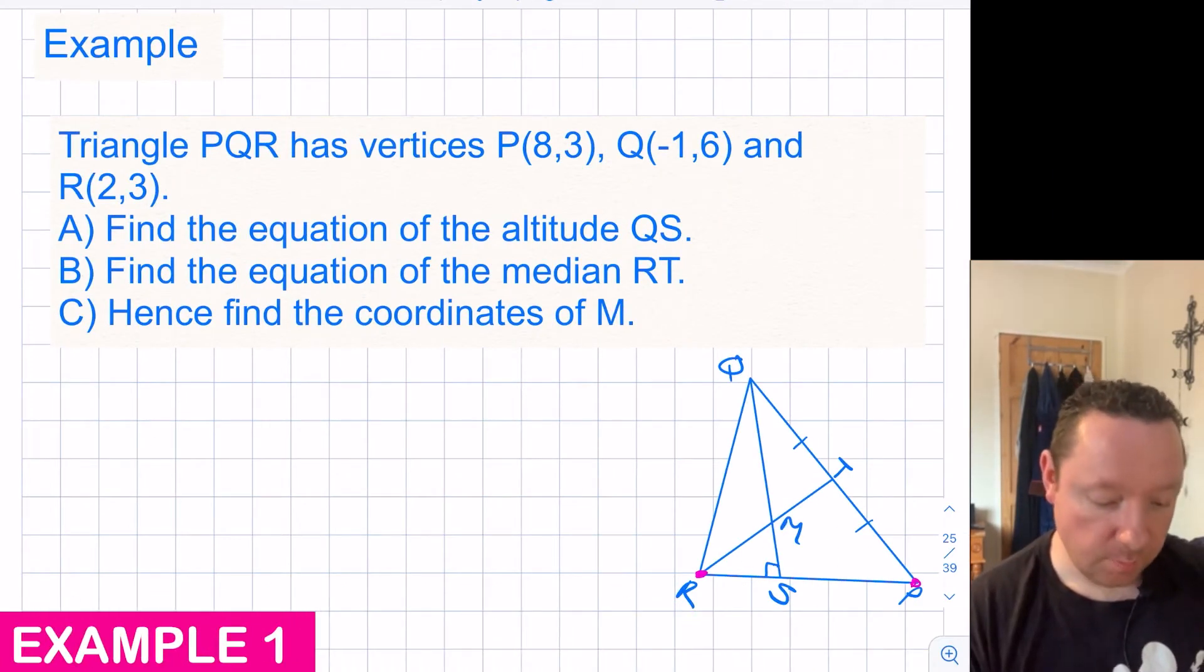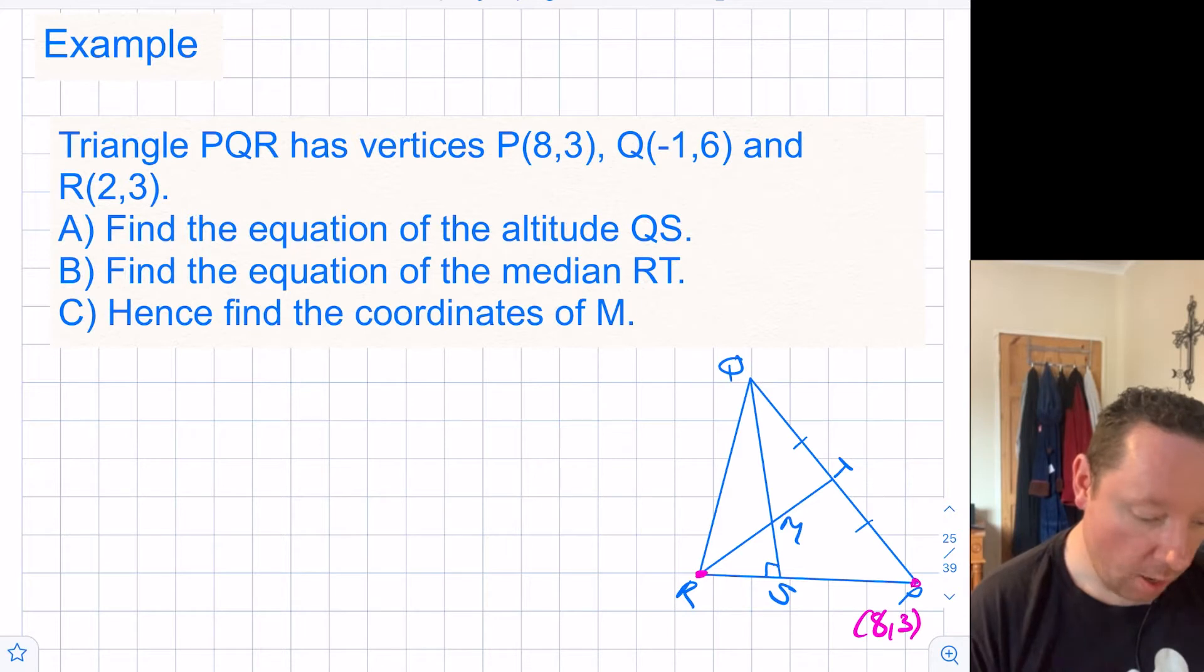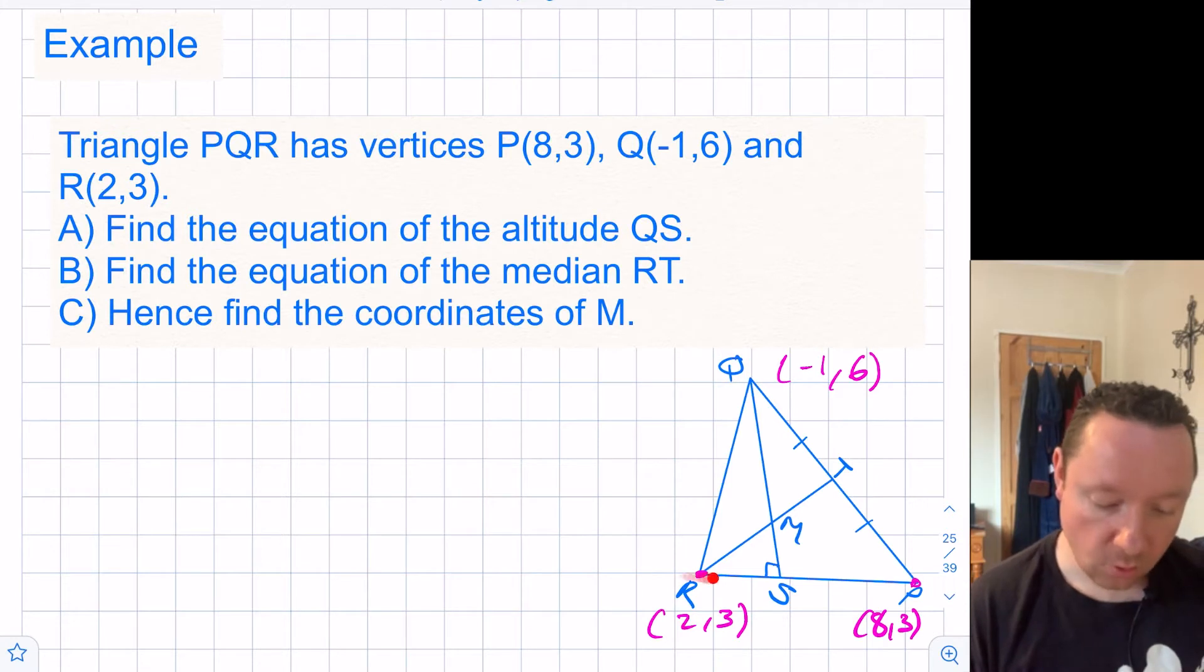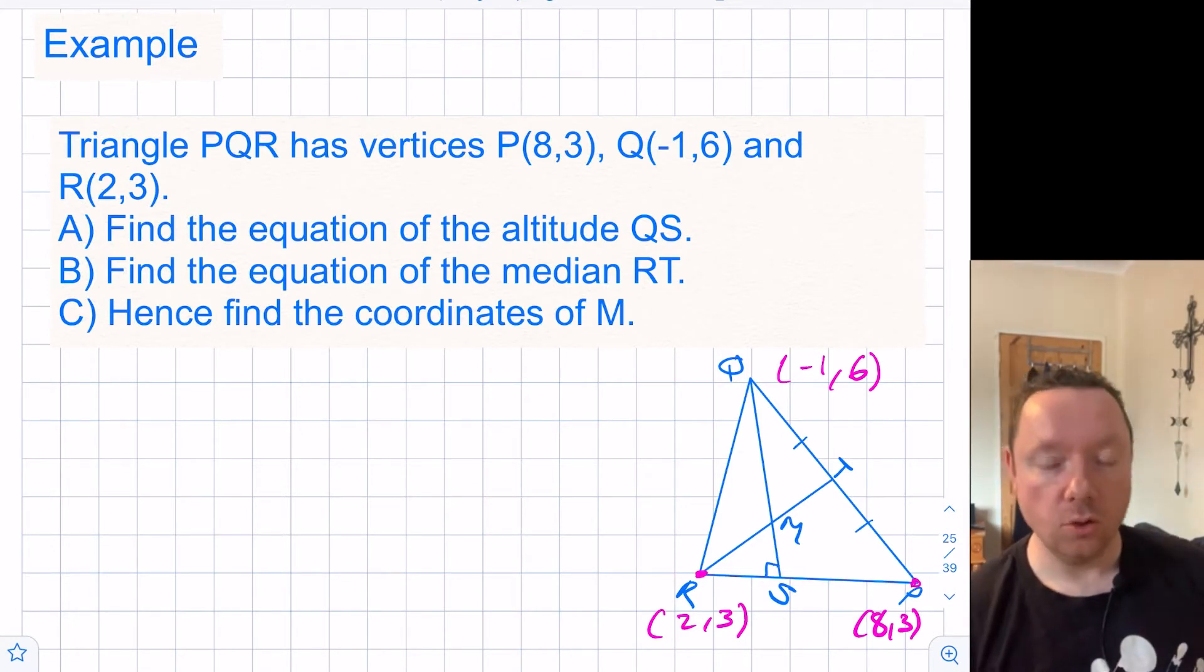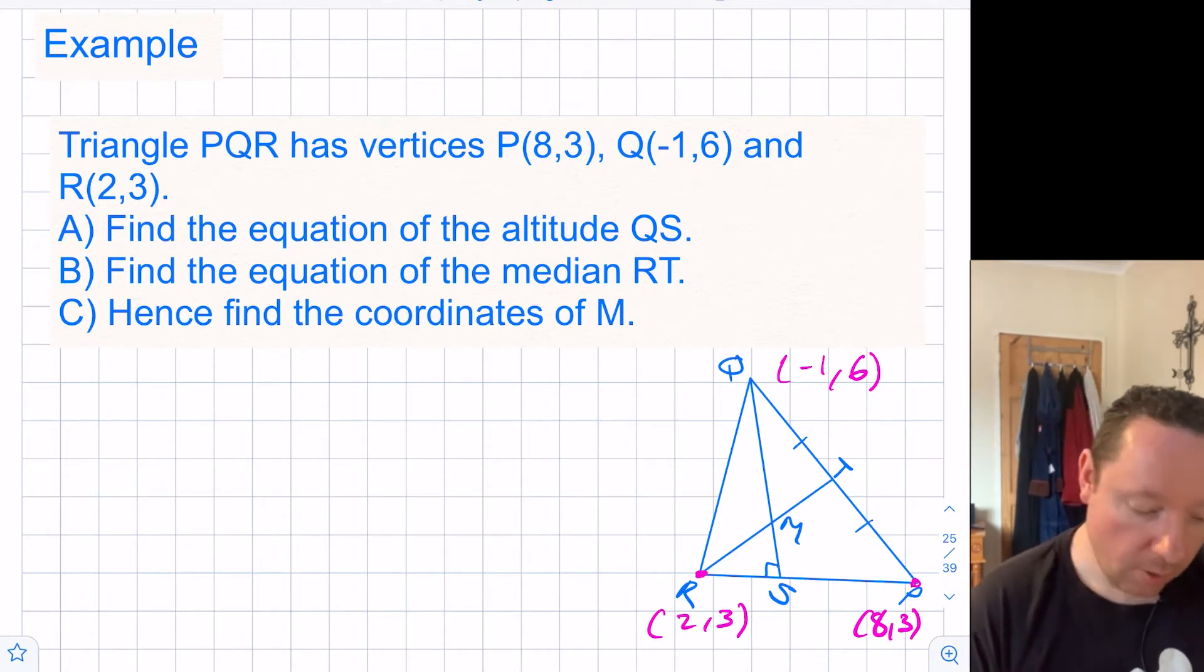Our example says triangle PQR has vertices P(8,3), Q(-1,6) and R(2,3). Find the equation of the altitude, a median, and the coordinates of M which is the point of intersection. Let's take note of our points: P is 8,3, R is 2,3, and Q is up here at -1,6. Obviously not a very accurate diagram but that's okay. It's accurate enough where we can see this is a horizontal line. We can tell straight away it's a horizontal line by looking at the coordinates. Notice the y coordinates are the same in each. Since the y is the same in each, it must be a horizontal line because y equals 3 in each case.